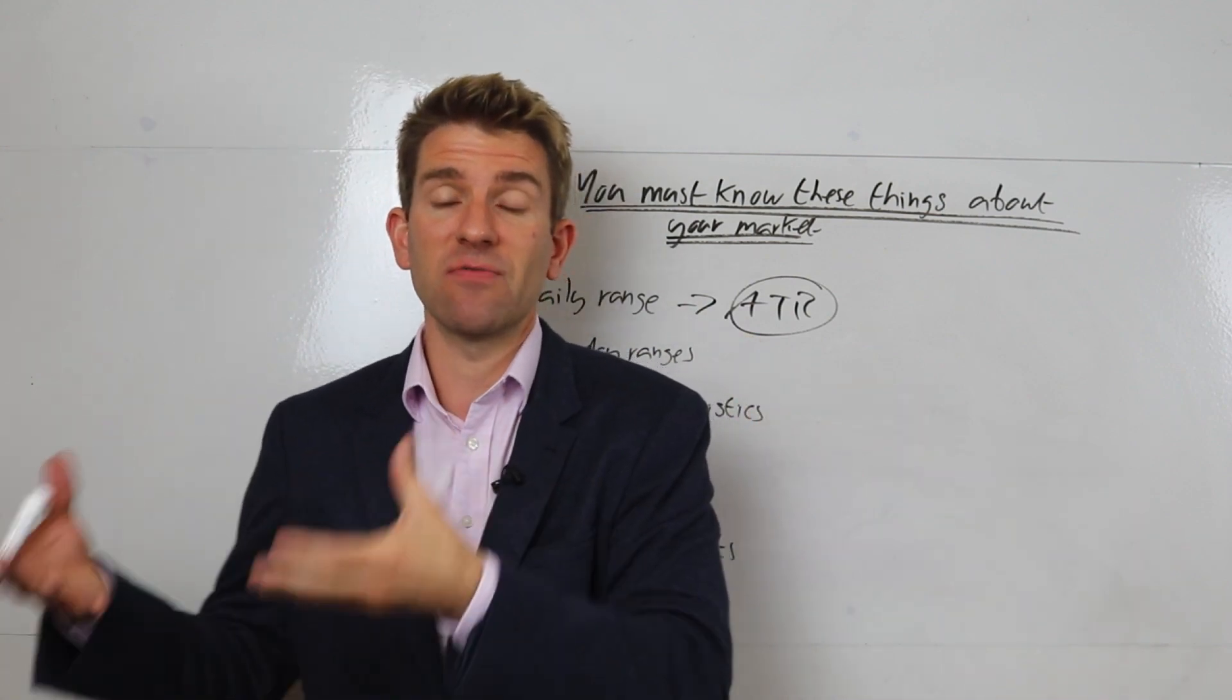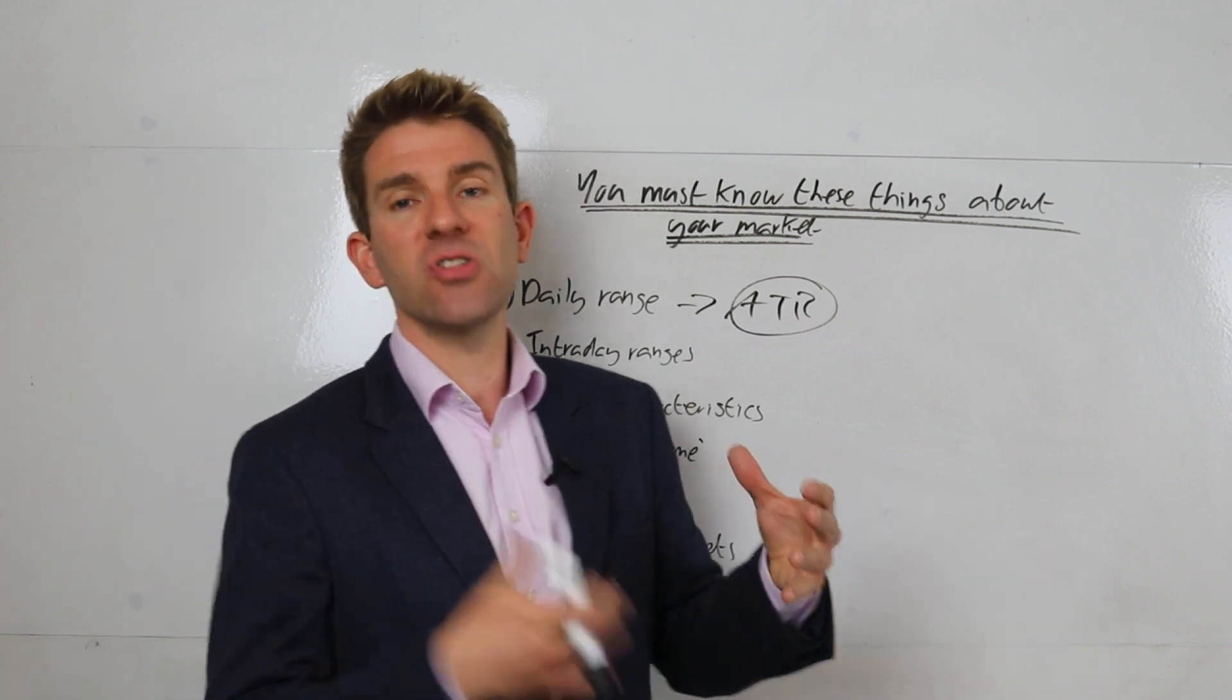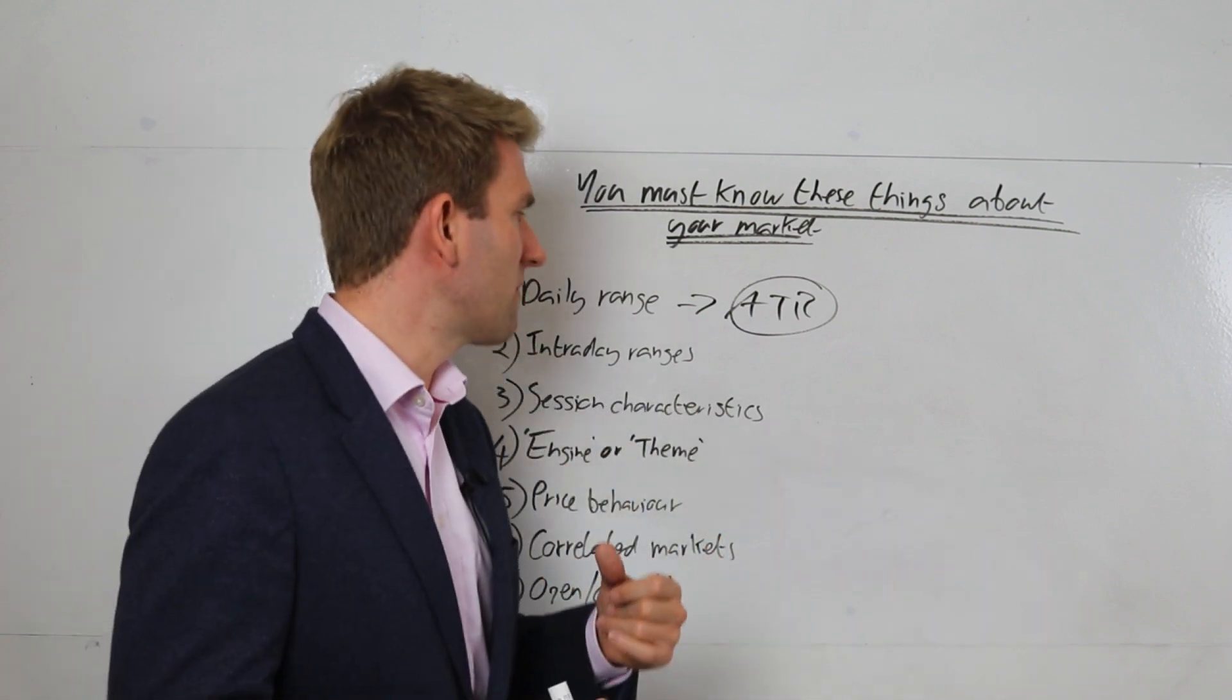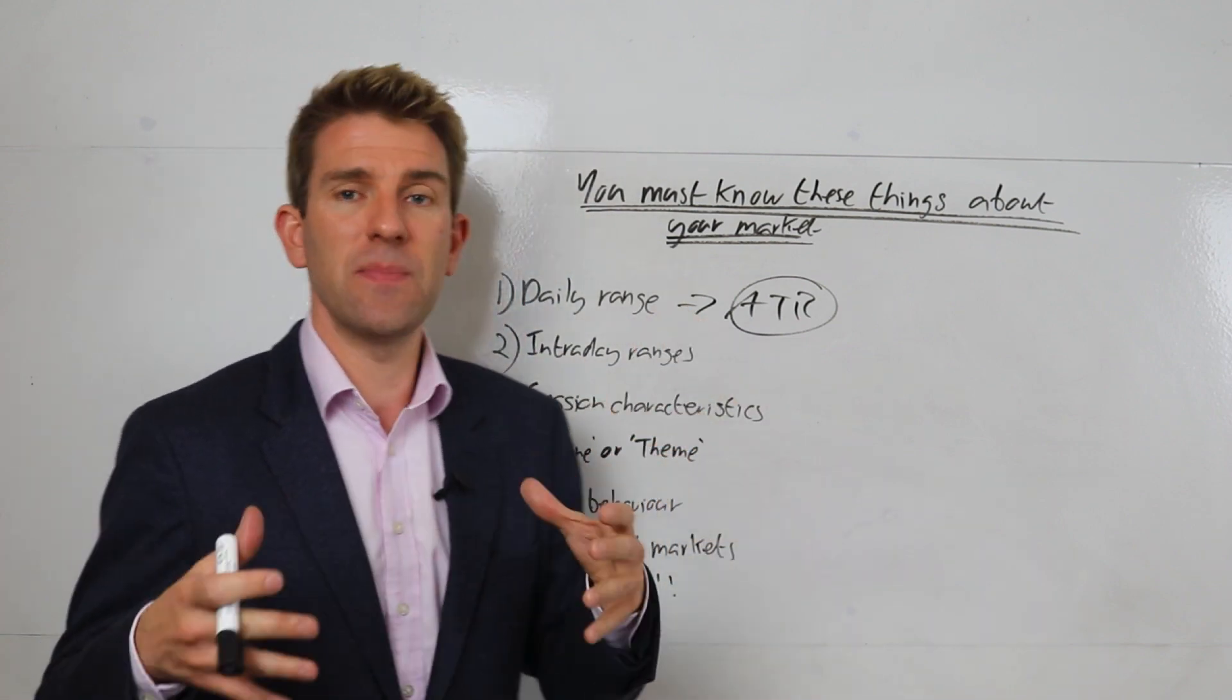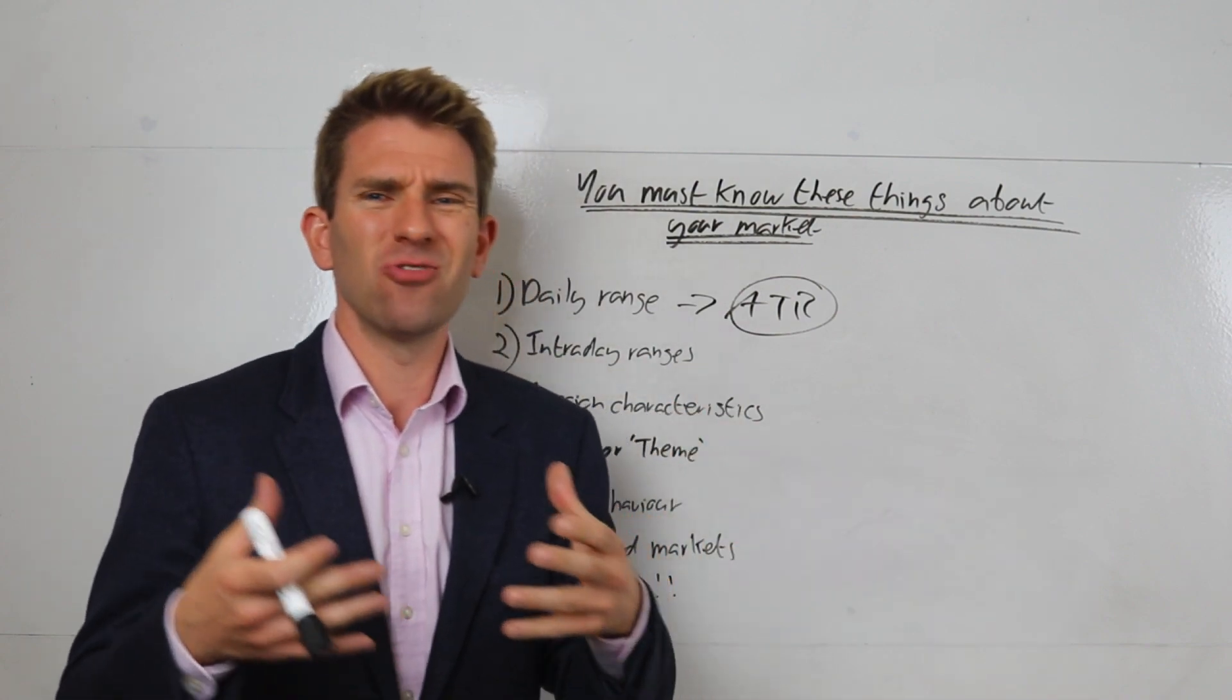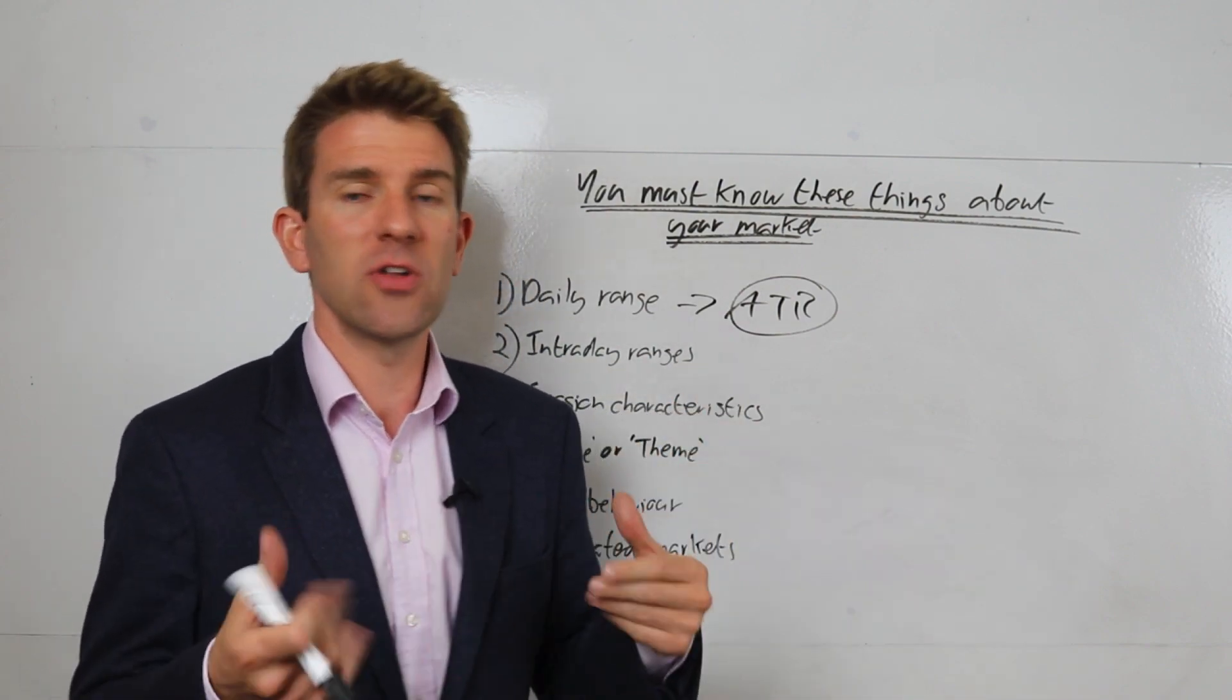And if it does, then what are the characteristics of that that says it's abnormal? So understanding their daily range. I've talked about this one quite a few times, but I still see people trading something that really isn't conducive to what they're trying to achieve.